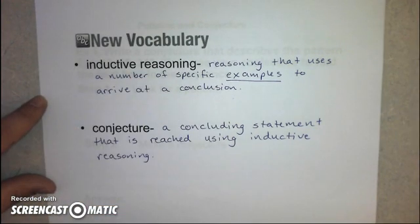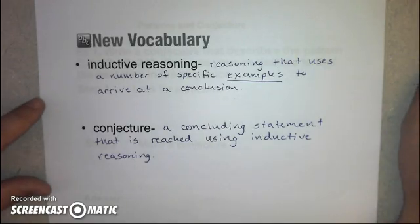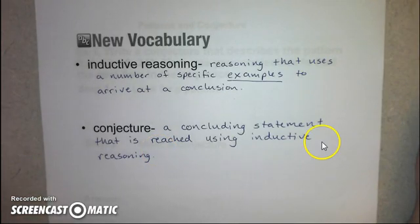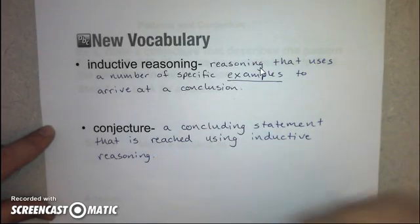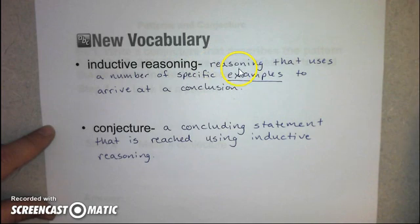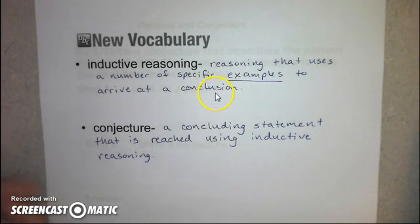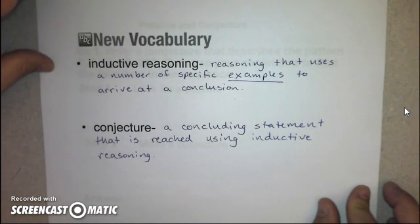We have this term inductive reasoning. That's your first highlighted word in this lesson. Inductive reasoning is reasoning that uses a number of specific examples to arrive at a conclusion. Then, the word conjecture is that conclusive statement, that conclusion you arrive at about that pattern or set of examples that uses inductive reasoning. Conjecture is a concluding statement that is reached using inductive reasoning.